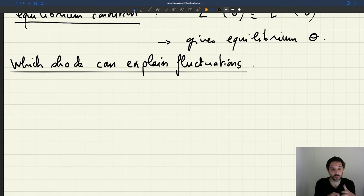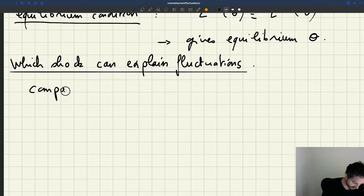So the first question is to figure out which are the shocks that can explain what we see in the data. So we are going to compare two types of shocks. We are going to compare labor demand shock.